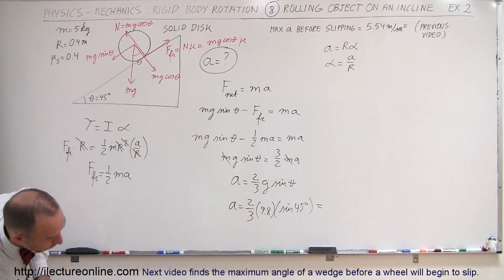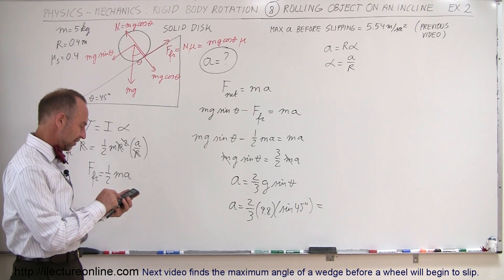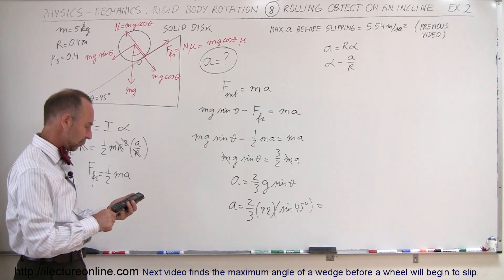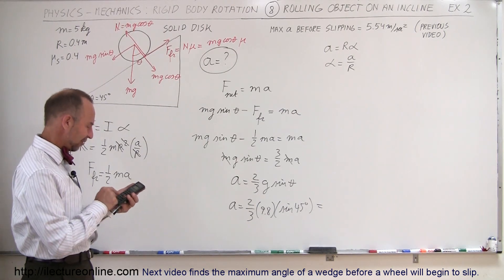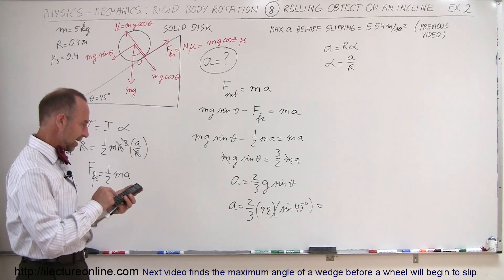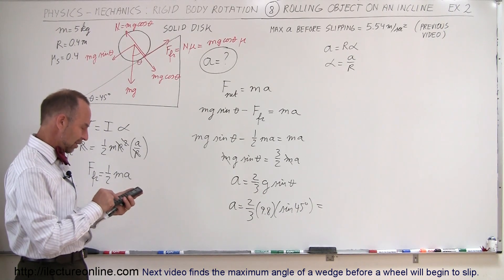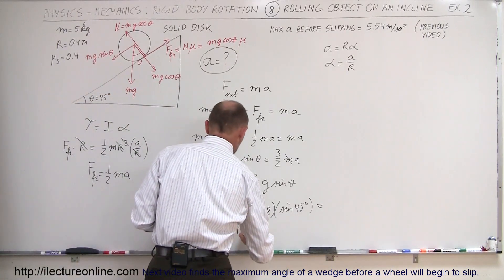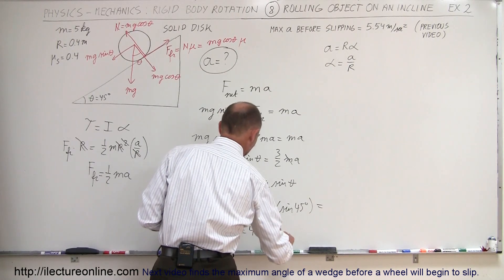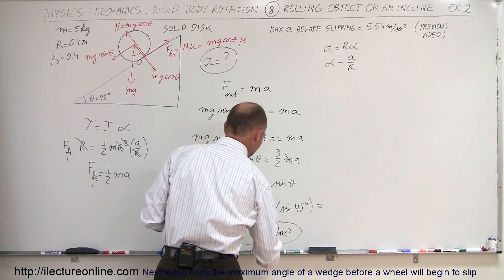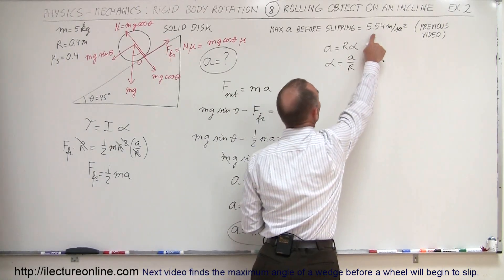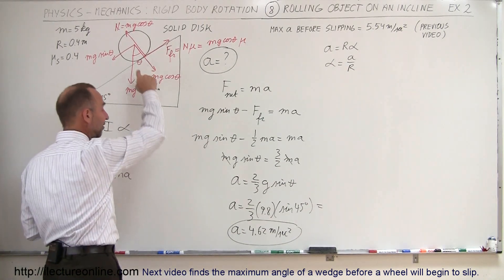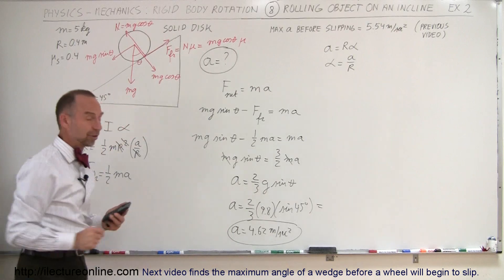Therefore the acceleration equals (2/3) × 9.8 m/s² × sine(45°), which gives 4.62 meters per second squared. Notice that 4.62 m/s² is less than the maximum acceleration of 5.54 m/s² before slipping, so our assumption was correct — the disc will not slip and the acceleration is 4.62 meters per second squared.